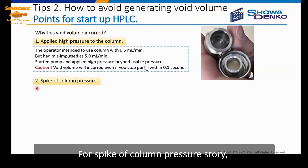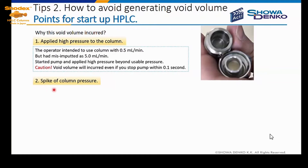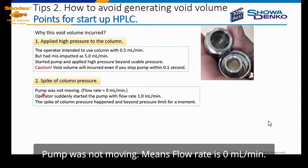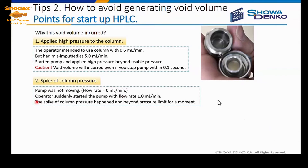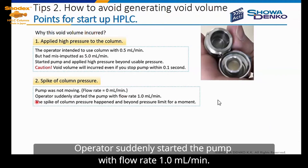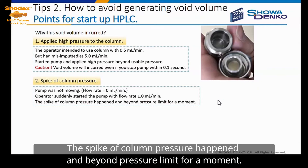For the spikes of column pressure story: a pump was not moving and the flow rate was 0.0 ml per minute. The operator suddenly starts the pump at a flow rate of 1.0 ml per minute, and a spike of column pressure happened, exceeding the pressure limit for a moment.